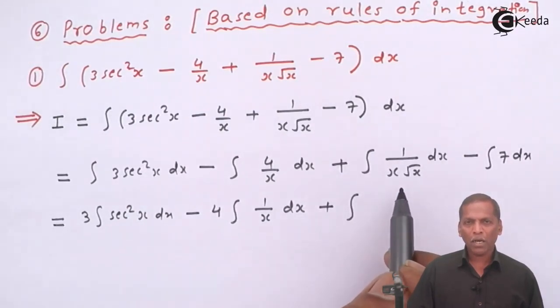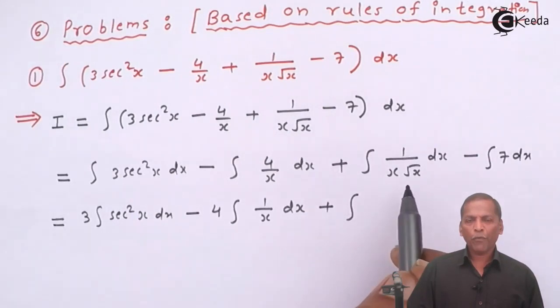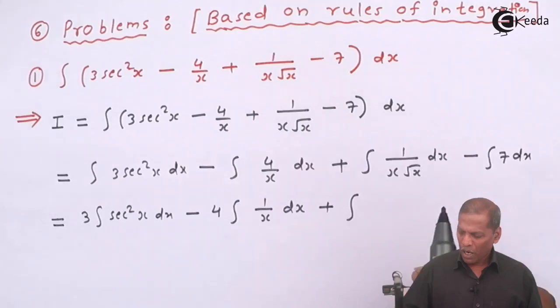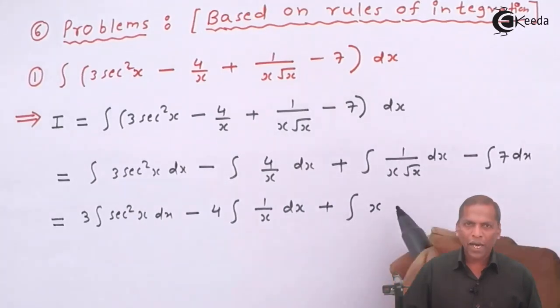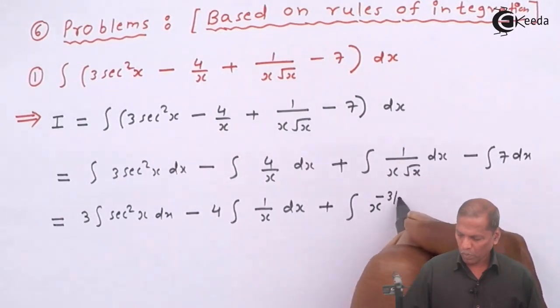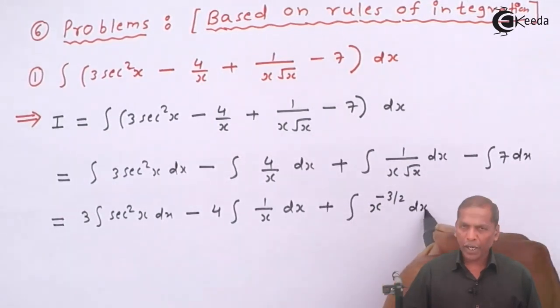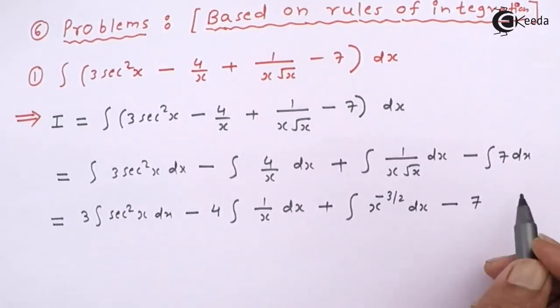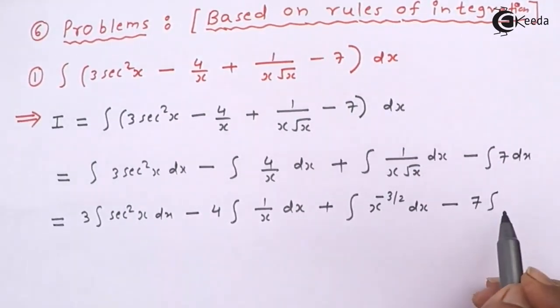So that in the denominator. And if you take in the numerator, this can be written as x raise minus 3 by 2 into dx. And then minus, here we take 7 outside the integral sign, so we left with 7 into integral 1 dx.